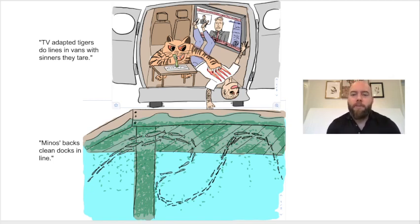So the first sentence to memorize: TV-adapted tigers do lines in vans with sinners they tear. On the right, you can see there's a tiger there. He's snorting lines with this sinner that he's tearing with his claws, and they're watching TV in the back of a van that they've adapted to.